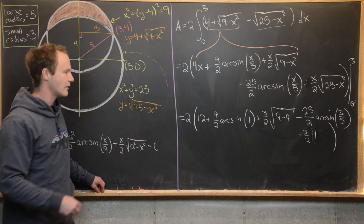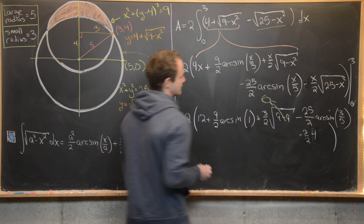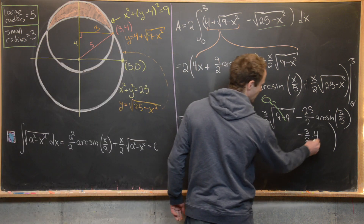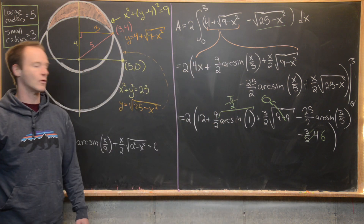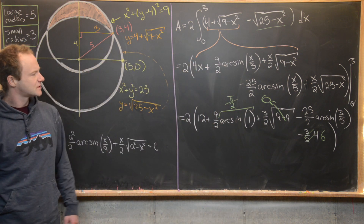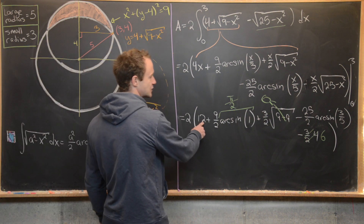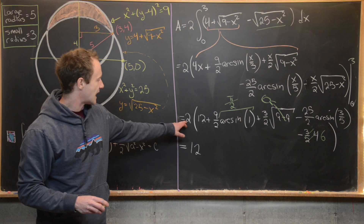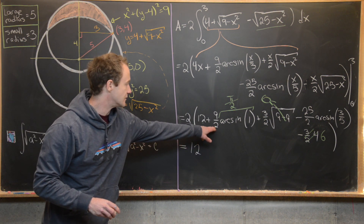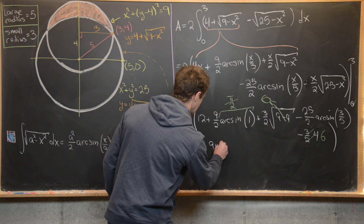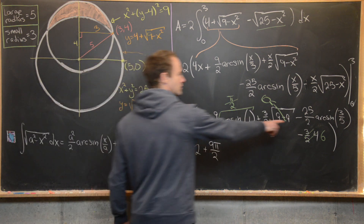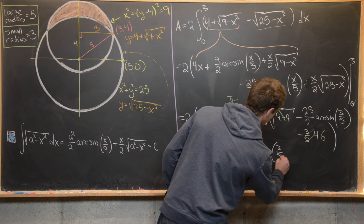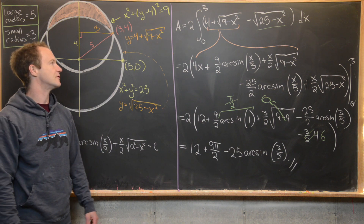Now we simplify. arcsin(1) = π/2, and the (3/2)·4 term simplifies to 6. So we have 2·[12 + (9/2)·(π/2) − 25·arcsin(3/5) − 6]. Distributing the 2 gives 12 + 12 + 9π/2 − 25·arcsin(3/5), which simplifies to 24 + 9π/2 − 25·arcsin(3/5). That is the final value for the area of the lune.